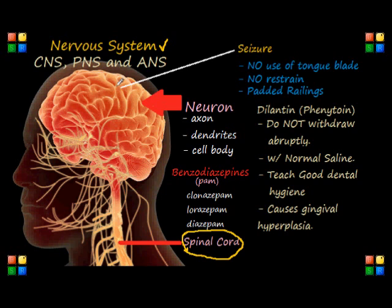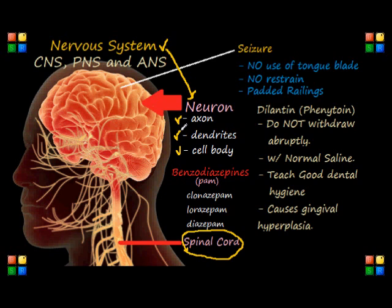Let's go back to the basic component of the nervous system, which is the nerve cell, or what we call the neuron. The neuron is basically the primary component of our nervous system, and it's composed of the cell body, or what we call the gray matter, and also our axon and our dendrites.